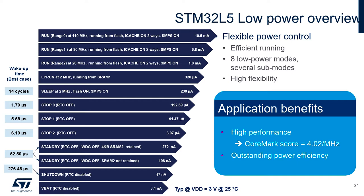In case of significant system clock reduction, for example down to 2 MHz, it is possible to use Low Power Run Mode. In such case, the consumption is at a level of 320 µA.